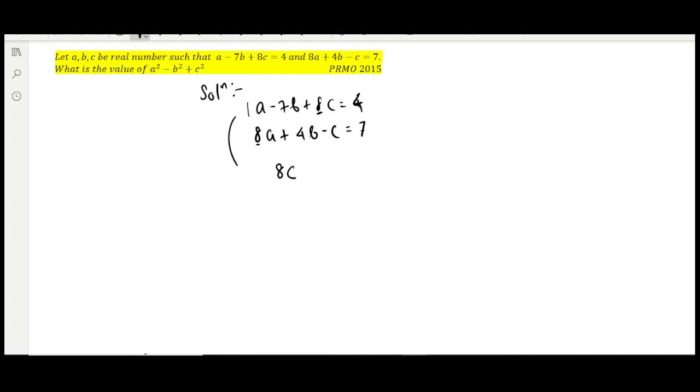So if you write the first equation as 8c plus a equals 4 plus 7b, and write the second equation as 8a minus c equals 7 minus 4b, the similar thing happens here also—the change, interchange of coefficient.